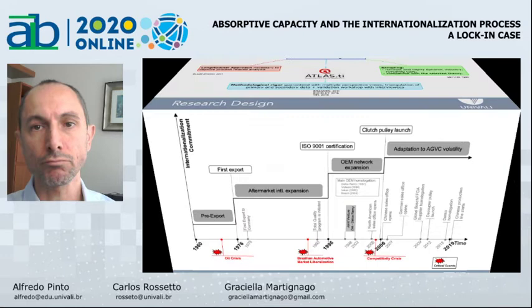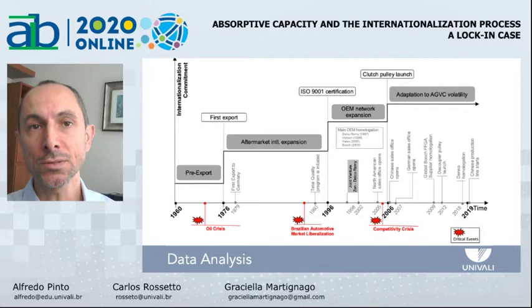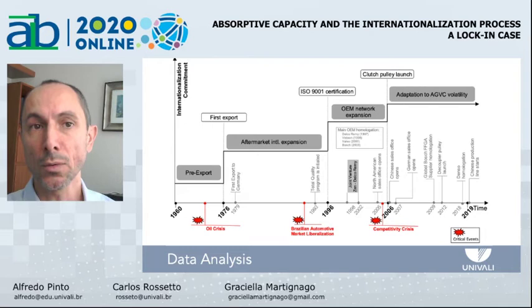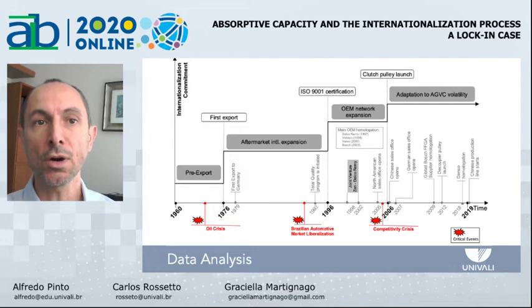Knowledge absorption and commitment processes followed an incremental development with an intertwined logic. Knowledge absorption capabilities and international commitment affected each other in a virtual cycle, as predicted by absorptive capacity and internationalization process theories. The international trajectory of ZEN, with its main milestones and critical events, is depicted in this timeline.